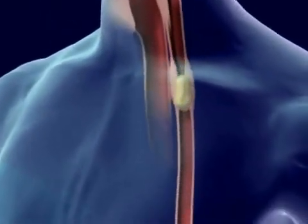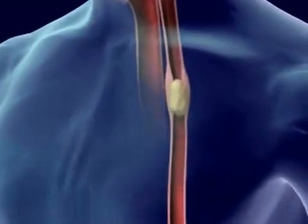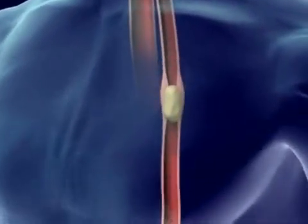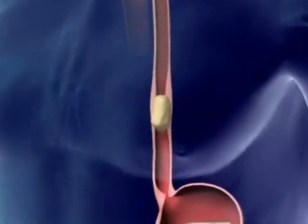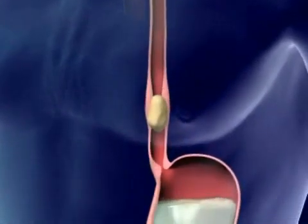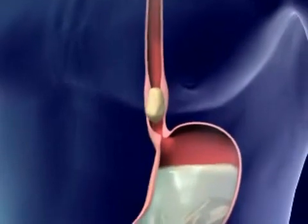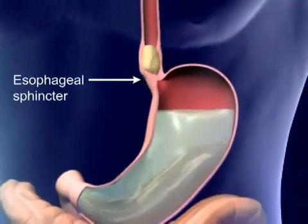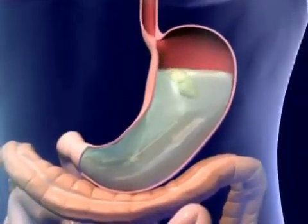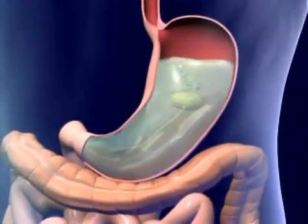Food goes from the pharynx to the esophagus. Food moves down the esophagus by peristalsis. The peristaltic wave reaches the esophageal sphincter and food enters the stomach.